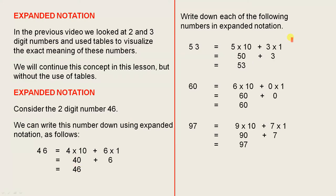Write down each of the following numbers in expanded notation. So in the same manner, 53 is 5 times 10 plus 3 times 1, 50 plus 3 is 53. 60 is 6 times 10 plus 0 times 1, 60 plus 0 is 60. And 97 is 9 times 10 plus 7 times 1, 90 plus 7 is 97.